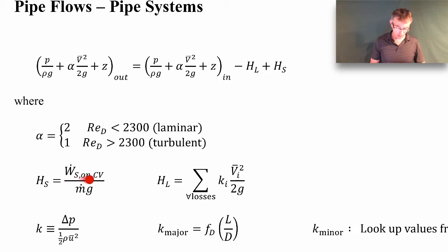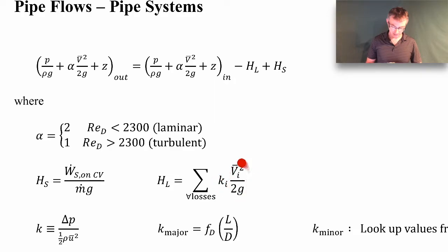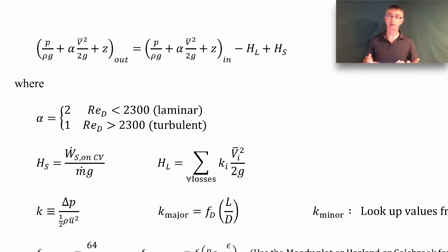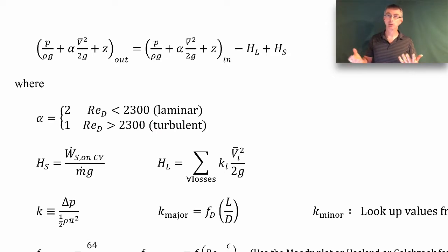If you're putting energy into the flow, such as with a pump or compressor, the shaft head is positive. If you're taking energy out, like a turbine, then it's negative. The head loss term is the sum of all the losses that occur in the pipe — for all losses, we have a loss coefficient times the velocity head where that loss occurs. The loss coefficient is defined as the pressure drop divided by the dynamic pressure, making it dimensionless based on the average flow velocity. For example, to find a valve's loss coefficient, you'd measure pressure at the inlet and outlet, measure the flow rate and cross-sectional area to get average velocity, then compute that dimensionless ratio.